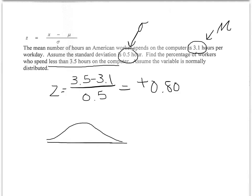If I draw a normal distribution curve, and I would suggest doing that on all these just to give yourself a visualization, a z-score of zero is right in the center. That will be if the person spent 3.1 hours. 3.5 hours is up here and we know this has a z-score of 0.80.